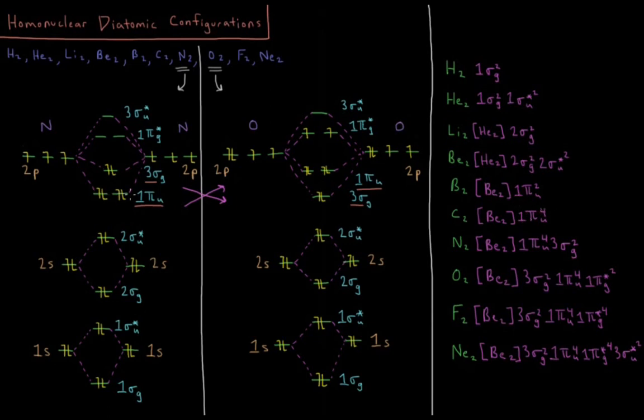Note there are two orbitals in πiu, so there are going to be four electrons that can fit in those four spin orbitals in those two spatial orbitals.